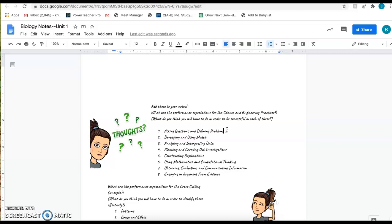To be successful, you need to ask good questions and be able to figure out what the problem is. I want you to write down each of these science and engineering practices and write down things you think you need to do to be successful. I'm not looking for specific examples, but maybe how you would be successful in doing that.